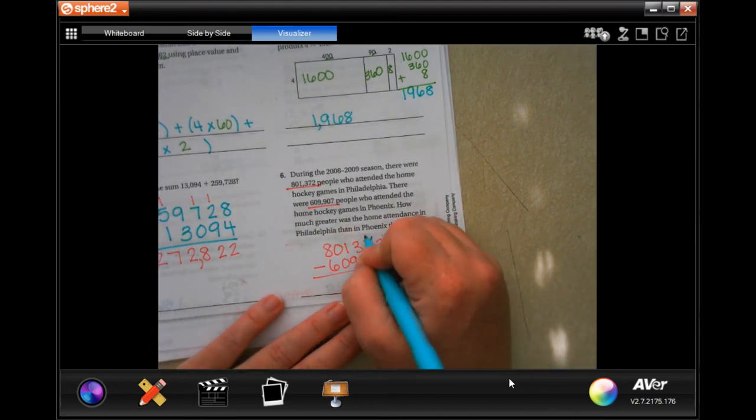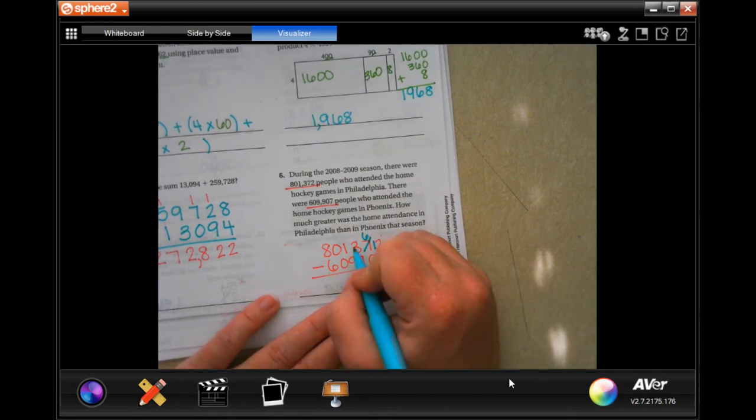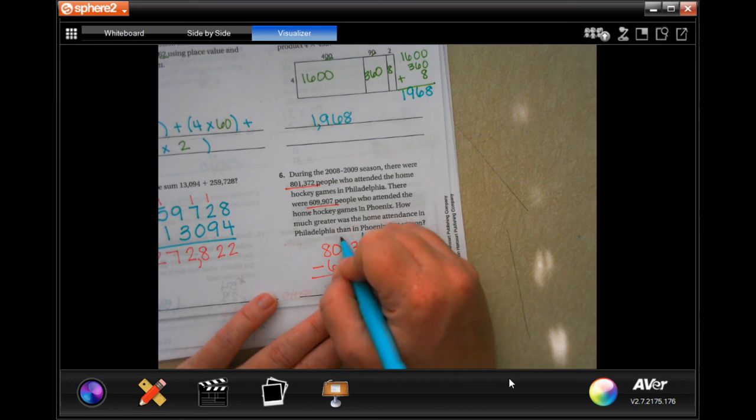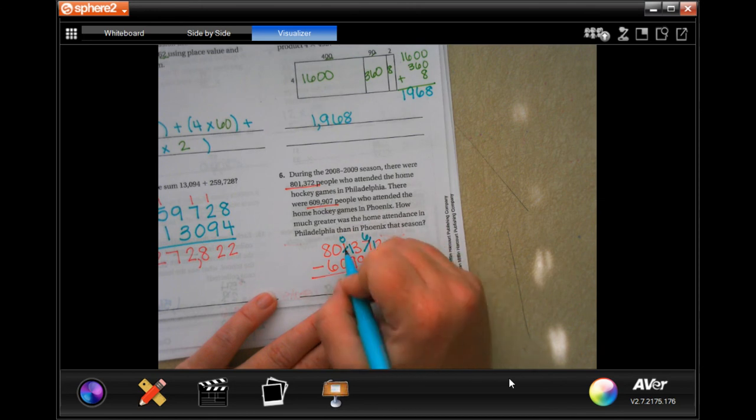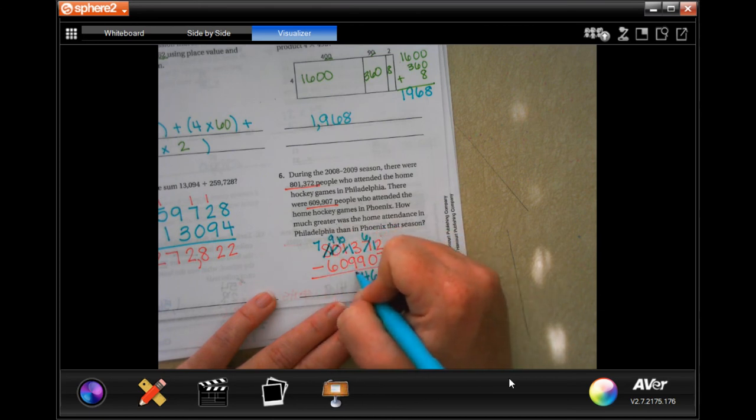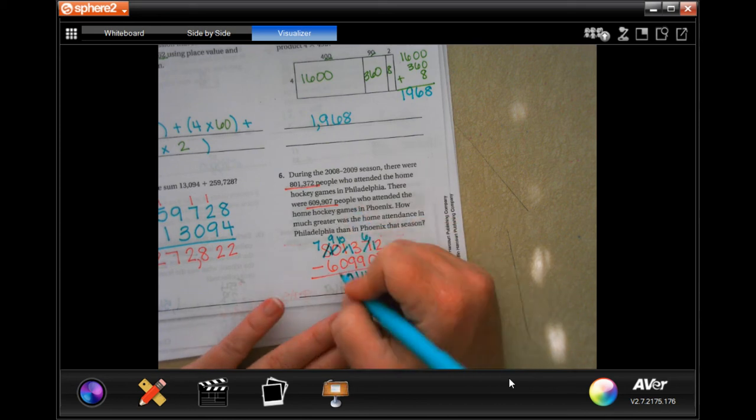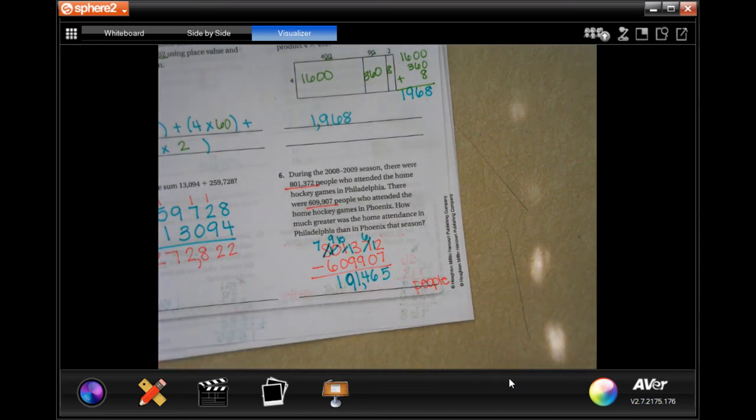Two cannot take away seven. I need to borrow one, making it 12. 12 minus seven is five. Six minus zero is six. Three cannot take away nine. I need to borrow one, making that 13. 13 take away nine is four. Zero cannot take away another nine. I can't borrow from that zero. I need to go over to the eight and borrow one, which makes that 10. Now, I can borrow one, making that nine and that 10. 10 minus nine is one. And nine minus zero is nine. And seven minus six is one. So, 191,465 people.